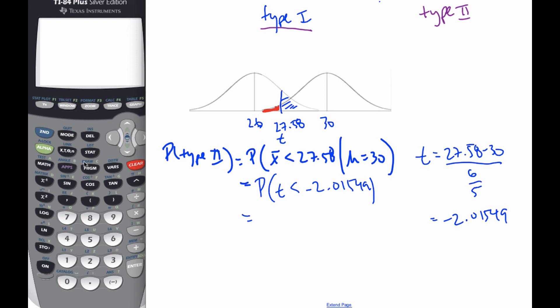To find that probability, I'm going second distributions, t CDF number 6, going from a big negative number to -2.01549. Degrees of freedom is 24. When I do that, I get the probability of 0.0276 to three significant figures.